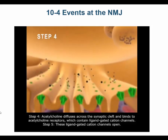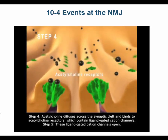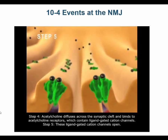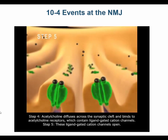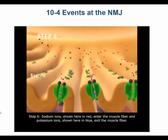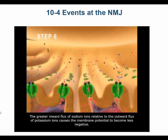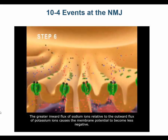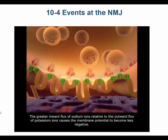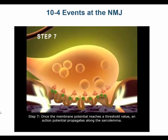Step 4: Acetylcholine diffuses across the synaptic cleft and binds to acetylcholine receptors, which contain ligand-gated cation channels. Step 5: These ligand-gated cation channels open. Step 6: Sodium ions enter the muscle fiber and potassium ions exit the muscle fiber. The greater inward flux of sodium ions relative to the outward flux of potassium ions causes the membrane potential to become less negative. Step 7: Once the membrane potential reaches a threshold value, an action potential propagates along the sarcolemma.